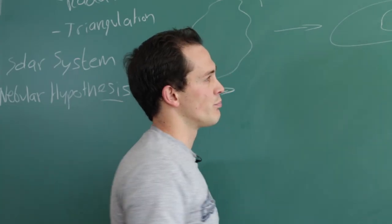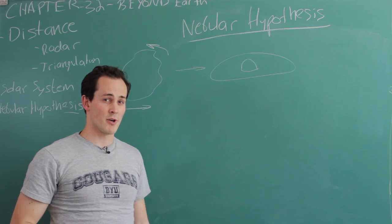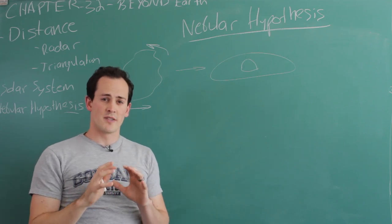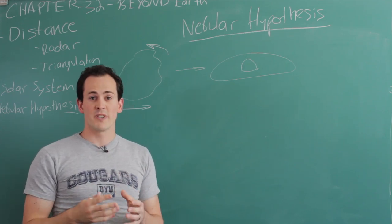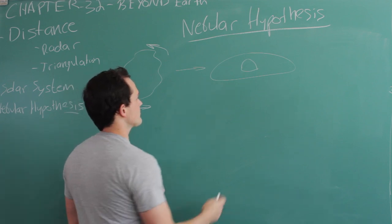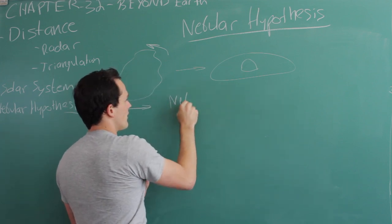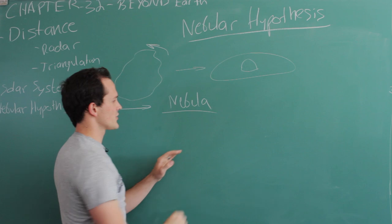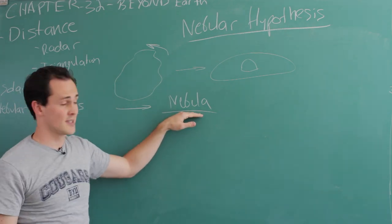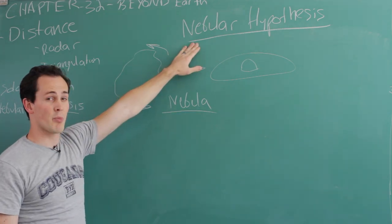It flattened out with this bulge in the center. It kind of looks like a sombrero. This bulge in the center is the most dense and the warmest place for material to accumulate. A nebula is just a cloud of gas and dust. That's where the name, the nebular hypothesis, comes from.